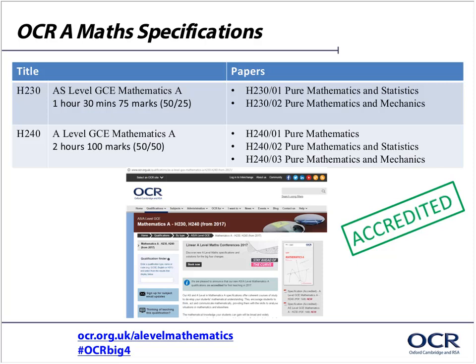In terms of the exams, the AS qualification H230 is made up of two one-and-a-half hour exams, each 75 marks. The first paper is pure and statistics, the second paper pure and mechanics, and each is split into Section A — pure, 50 marks — and Section B — applied, 25 marks. In the full A-Level, H240, we have a first paper which is a pure maths paper, and then a pure and statistics and a pure and mechanics paper, again split into Section A pure and Section B applied, split 50-50.